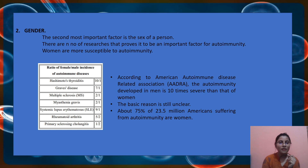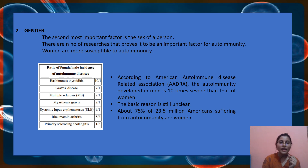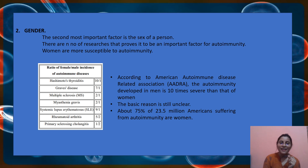Research shows the ratio of male to female incidence of autoimmune diseases. For Hashimoto's thyroiditis, out of 11 affected people, 10 are female and 1 is male. For Graves' disease, if 10 women are affected then only 1 man will be affected. Multiple sclerosis has a 2:1 female-to-male ratio. SLE is very famous for affecting women — the ratio is 9:1. Rheumatoid arthritis has a 5:2 ratio.